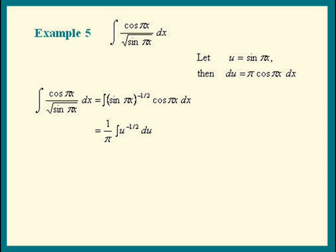Now we apply the power rule. Add 1 to the power and divide. Dividing by 1 half, just turn that upside down. We get a 2. We have 2 over π times square root of u plus c. Substitute the x's back in, and we're done.